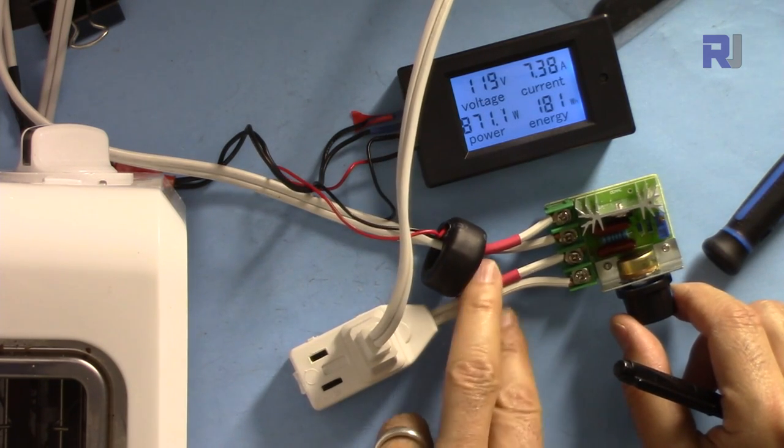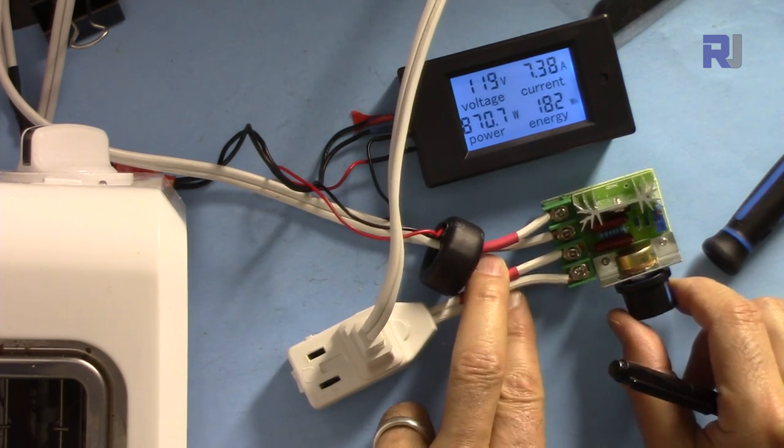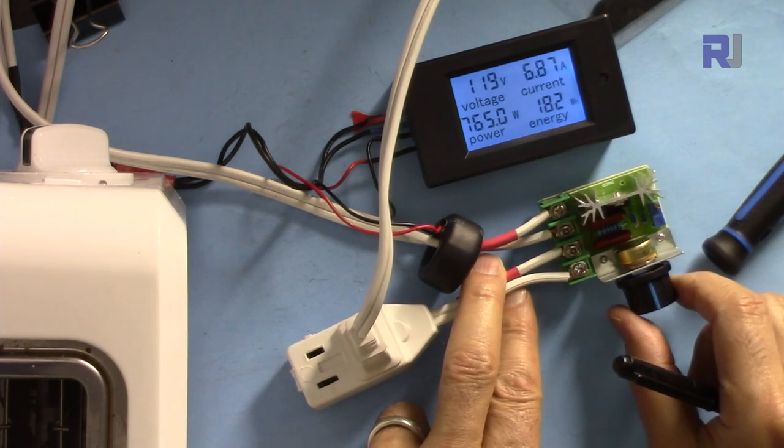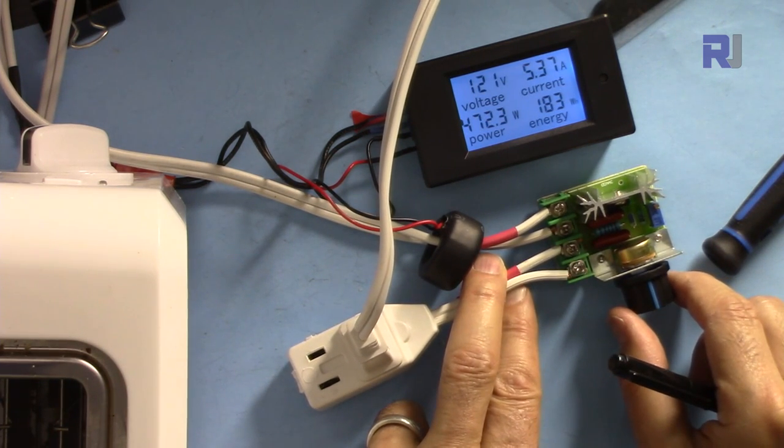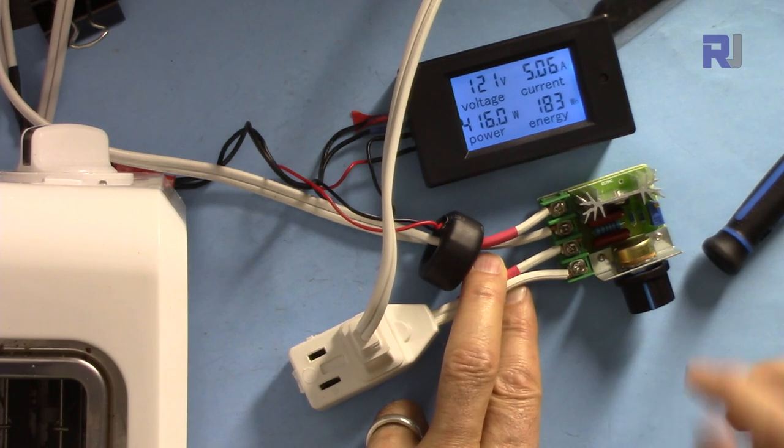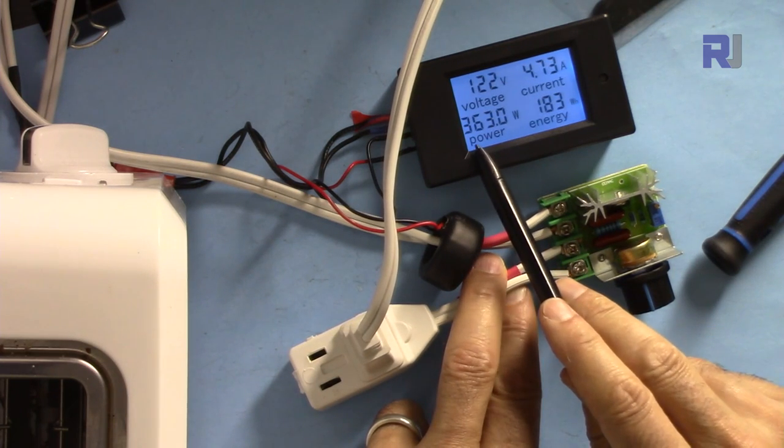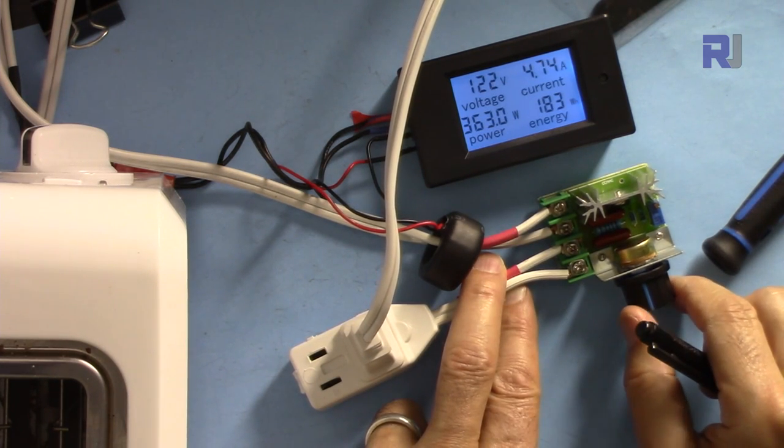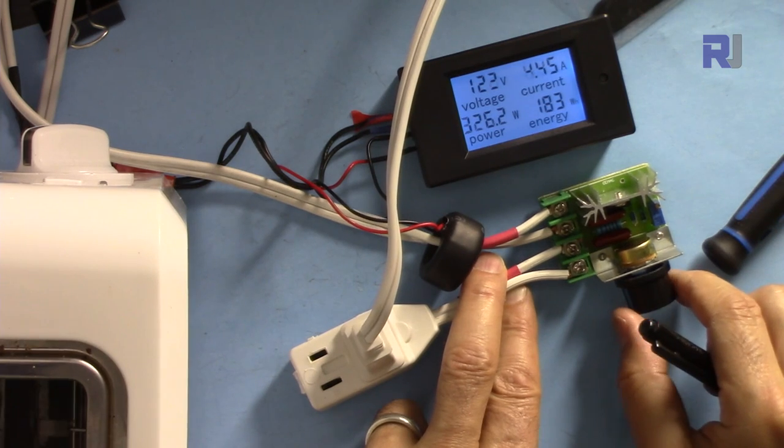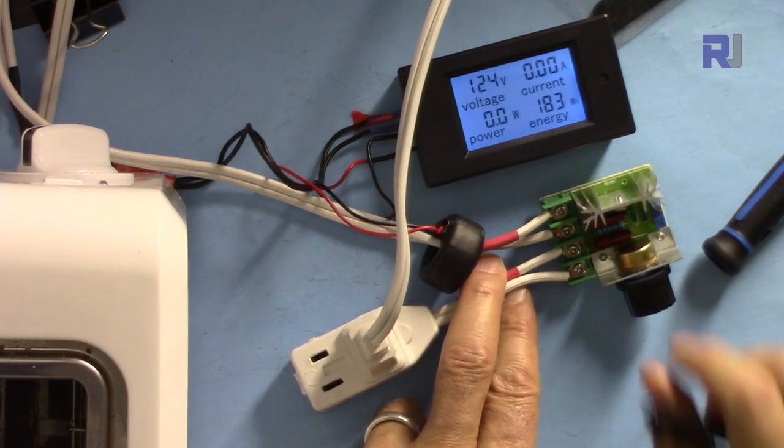So we have reduced it to 300 watts. Let me go to zero. What happened? The toaster is turning off.